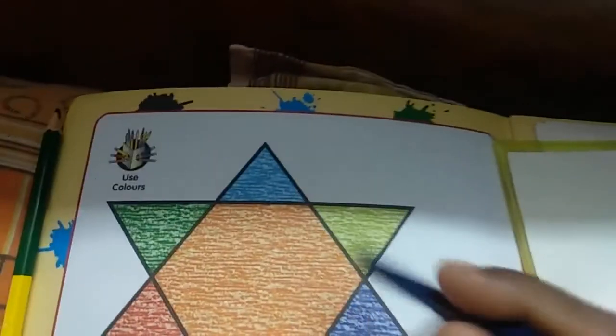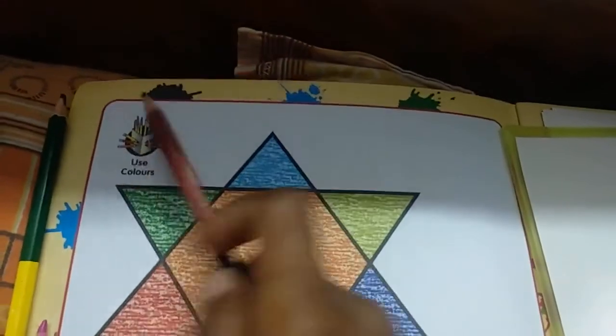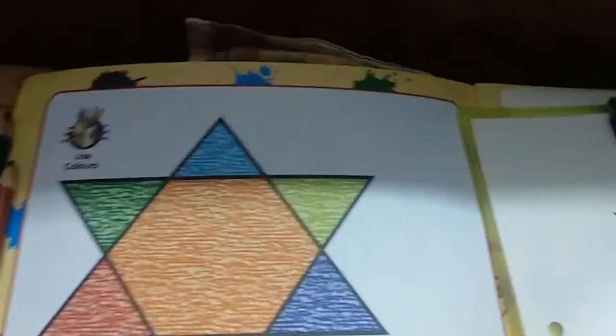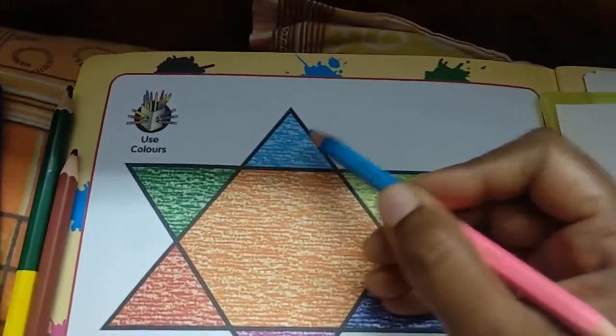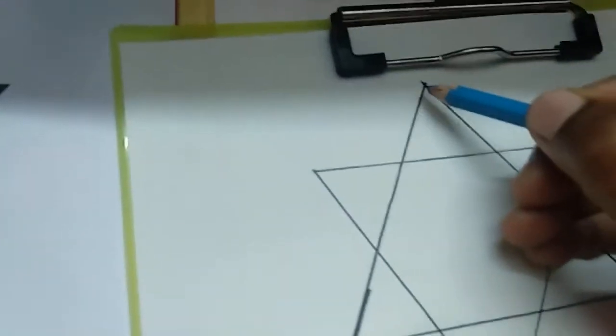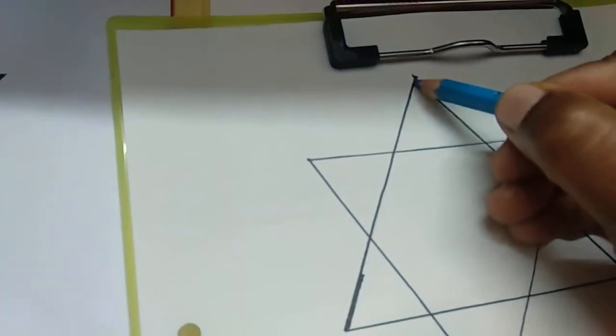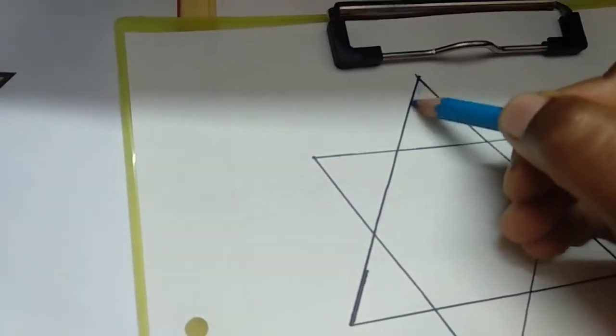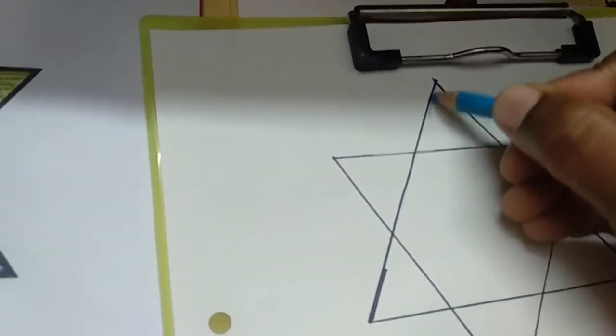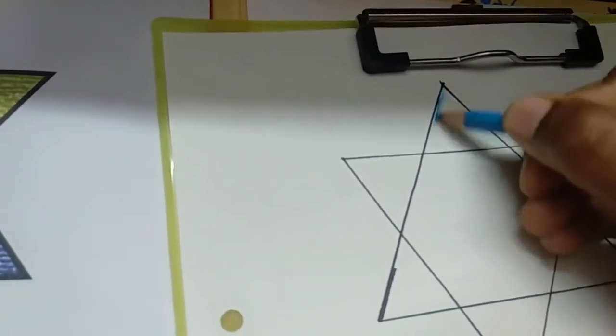See children, first we will start from the top. So what is the color on top? That is sky blue. So children, let's start coloring the top. Very slowly we have to color. You may not be hurry. You will color very slowly and nicely.